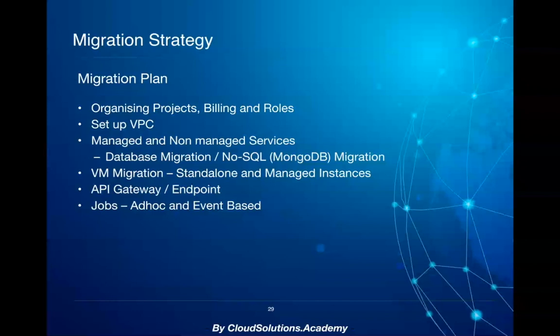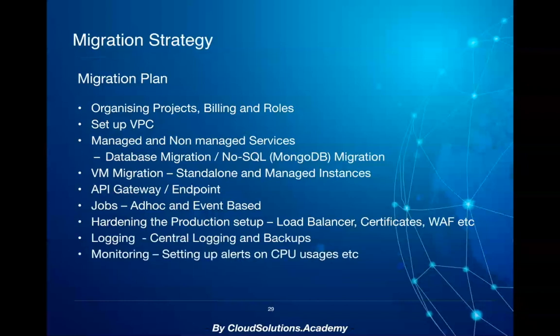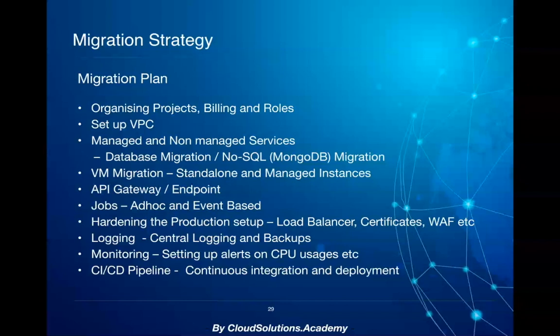Once the application has been migrated, you look at how to harden the production setup — for instance, which AWS services to leverage for security and auditing. Once the production application is up and running, you set up central log management to log various events and configure monitoring alerts based on required metrics and thresholds. Finally, with respect to tooling, you identify compatible AWS services for continuous integration and continuous deployment to roll out applications effectively in the required environments.